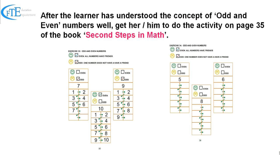After the learner has understood the concept of even and odd numbers well, get her or him to do the activity on page 35 of the book, Second Steps in Math. Thank you.